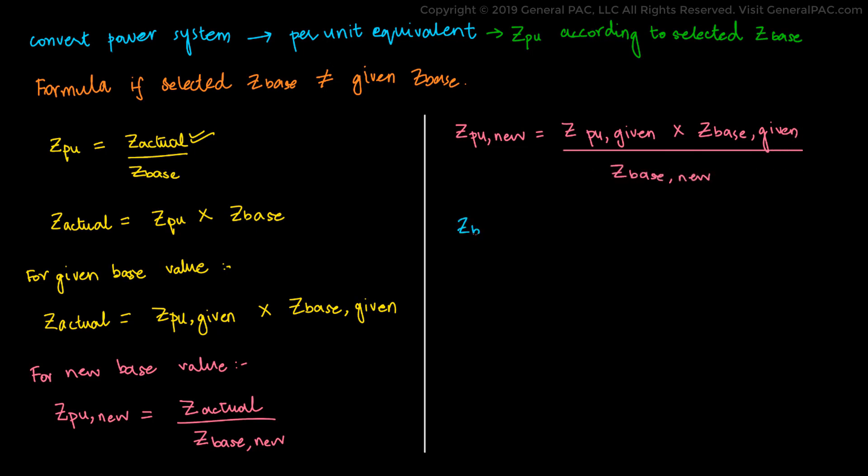From our previous videos, we know that the base impedance is equal to the base voltage squared divided by the base power. So Z base given equals V base given squared divided by S base given, and Z base new equals V base new squared divided by S base new.